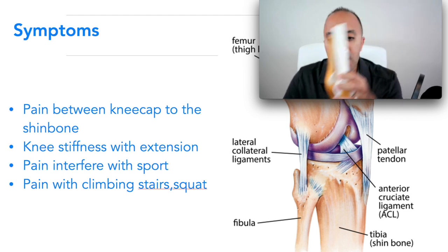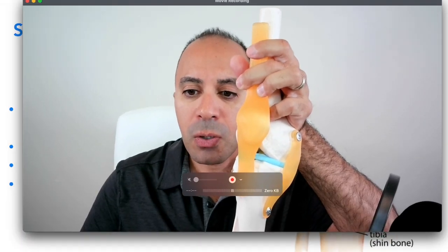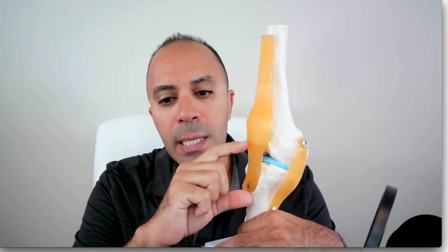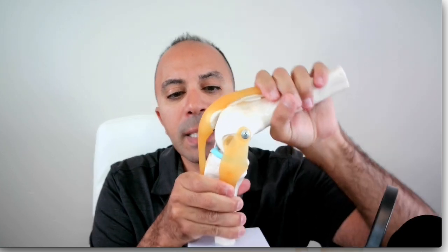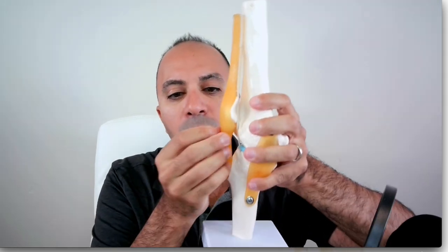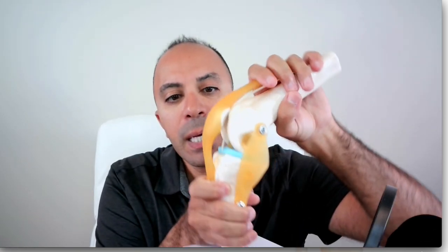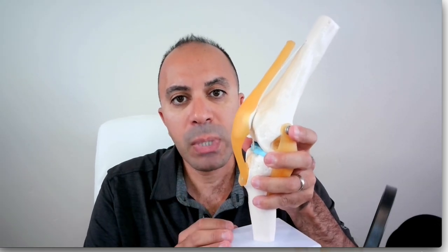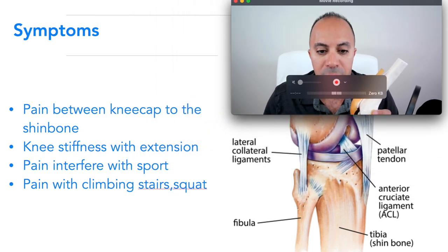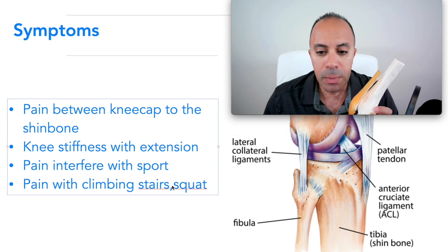Also knee stiffness, especially with extension. On this knee model you can see the patella tendon attached from the tibia up to the patella. This area becomes inflamed and builds up scar tissue, so when you flex your knee that stretches the area, and extension causes more stress on the inflamed tendon. Squatting, running, and jumping put a lot of stress on this area and trigger pain. Stiffness in the knee can interfere with sports activity, stairs climbing, and squatting.